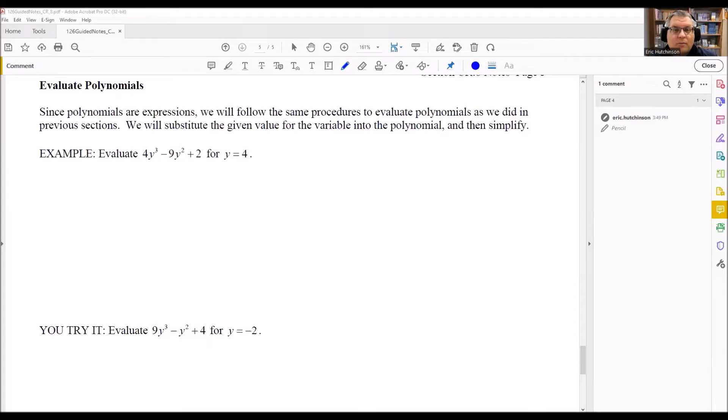We've looked at some previous problems in previous sessions where we evaluate. Evaluate just means that you're going to replace the variable with the number that's given. So now we're going to apply this again, but we're going to be doing that with specifically polynomials. So the idea is still the same here. Whatever variable you see there, we're going to replace it with 4 in this first question.